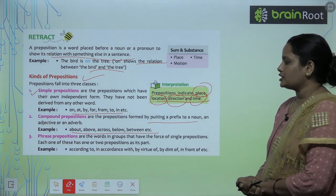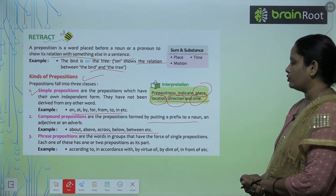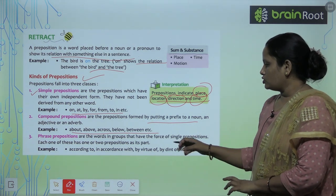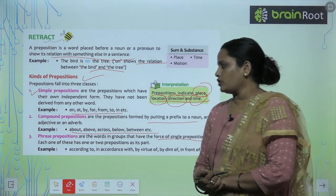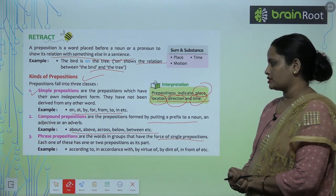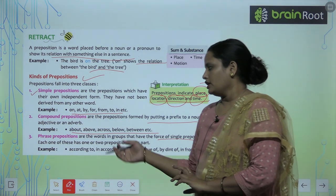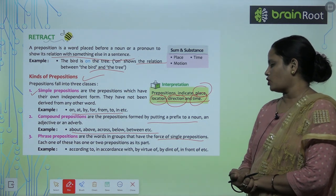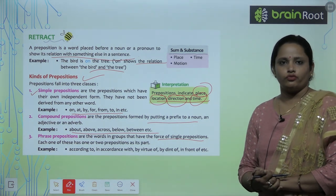The third kind is phrase prepositions. These are words in a group that have the force of single prepositions — jinn mein force hota hai single prepositions ka. Each one of these has one or two prepositions as its parts. Examples include: according to, in accordance with, by virtue of, by dint of, in front of, etc. So these are in the form of phrases.